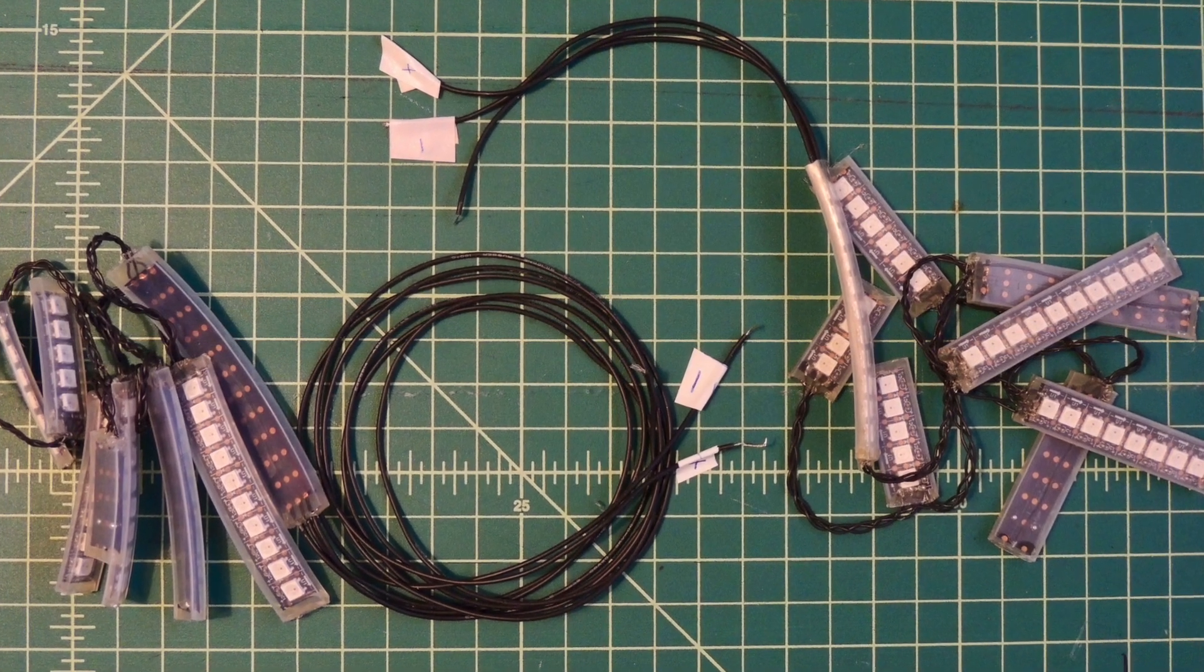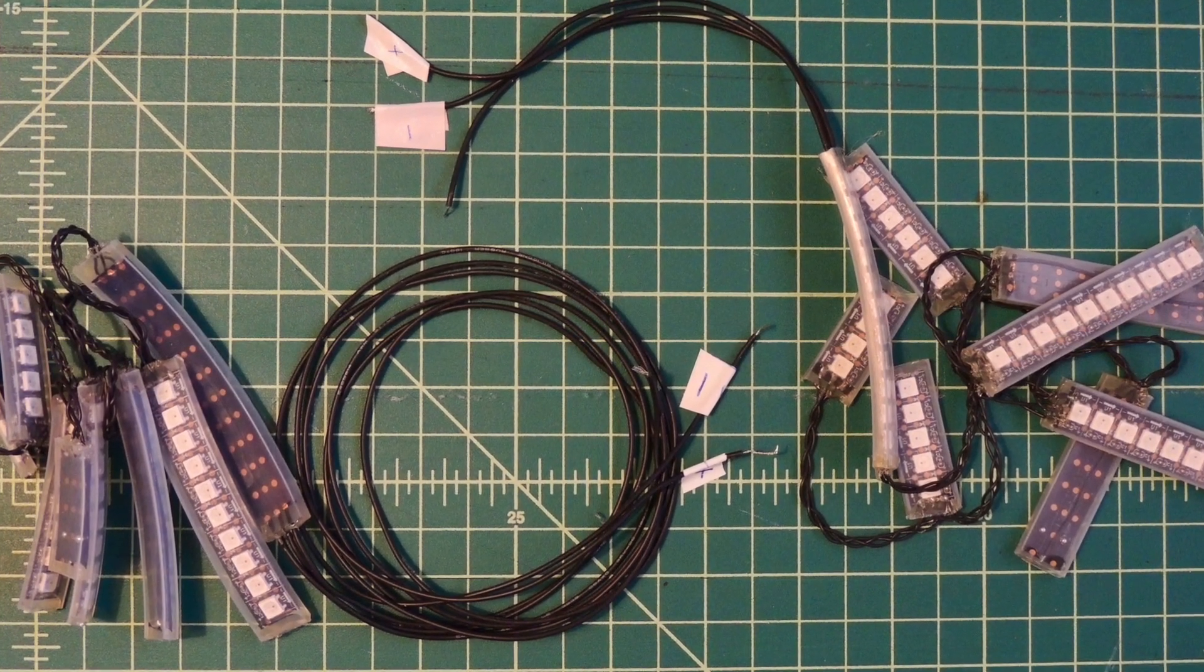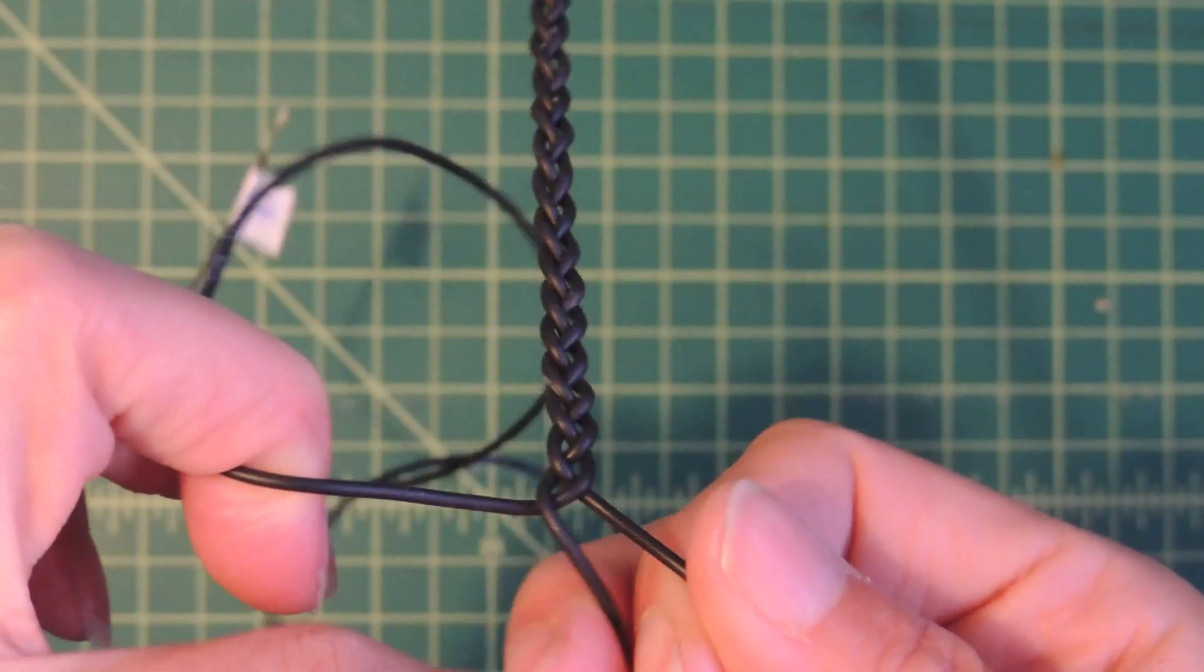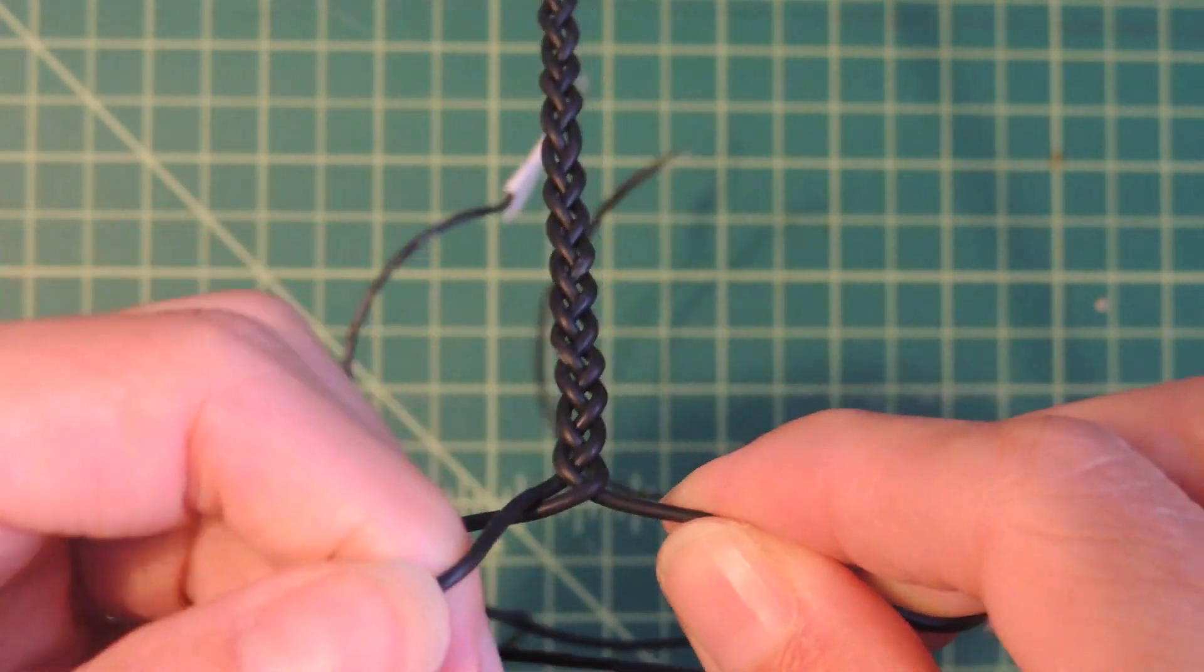Solder longer leads from the pixel strips that will run to the Gemma. Label wires, especially if you're using wires of all the same color.